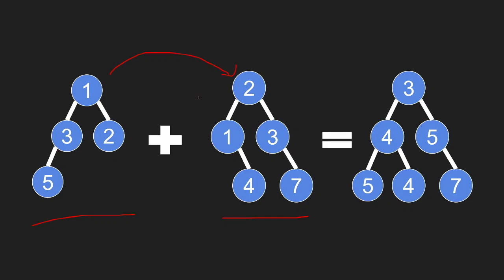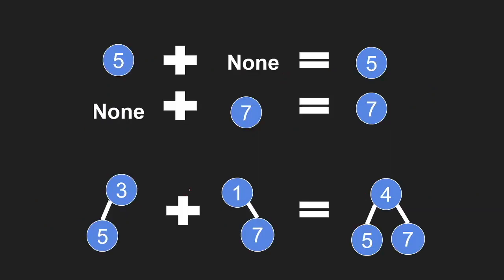When you do this, some nodes will overlap and some nodes will not. This one and this two will overlap, and in the case where they do overlap you are to add the values in those nodes — in this case you will get a three. In instances where nodes do not overlap, for example there is a five in the first tree but no node at that position in the second tree, you are to just take the node that is not null — in this case, the node with five.